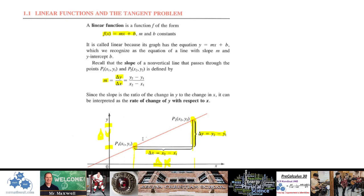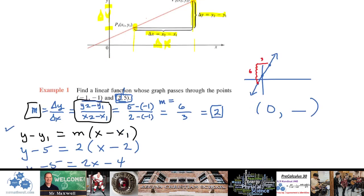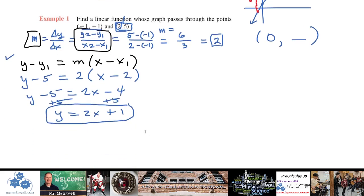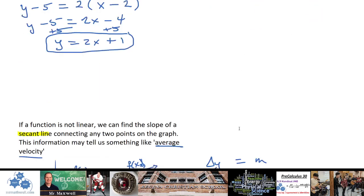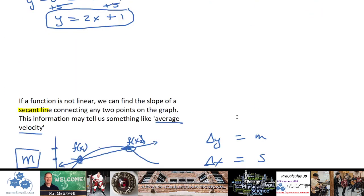In 1.1, we first talked about linear functions. We reviewed rise over run, we reviewed slope. We talked about how to generate a linear function given two points: find the slope, use point-slope form, and then simplify that to an equation, so you can find the equation of a line given two points.